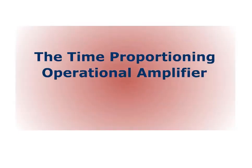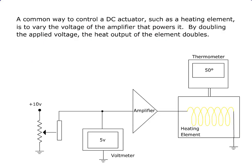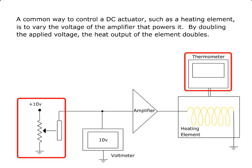Welcome to the Time Proportioning Operational Amplifier video. A common way to control a DC actuator, such as a heating element, is to vary the voltage of the amplifier that powers it. By doubling the applied voltage, the heat output of the element doubles. Watch as we double the voltage.